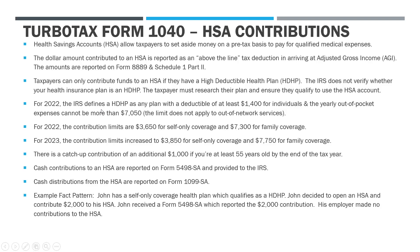The threshold for what constitutes a high deductible plan does change. For 2022, the IRS defines this as a plan with a deductible of at least $1,400 for self-only coverage, with yearly out-of-pocket costs not exceeding $7,050. As for how much you can contribute: for 2022 the contribution limit is $3,650 for a self-only plan and $7,300 for family coverage.